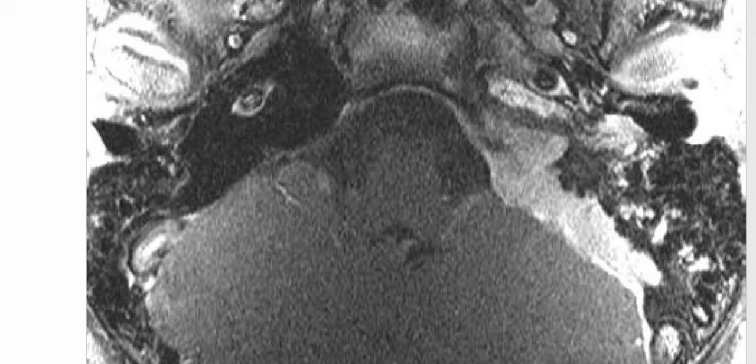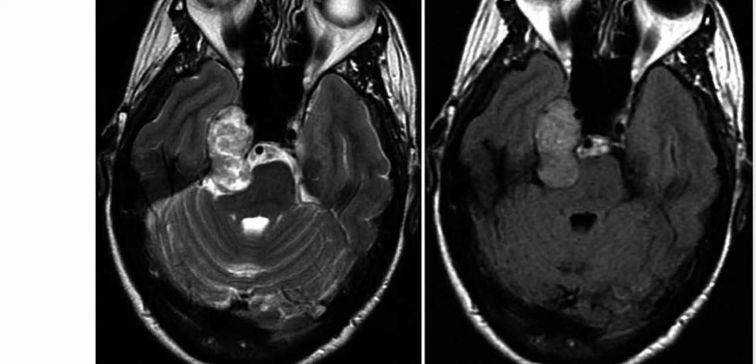Extramedullary hematopoiesis and Rosai-Dorfman disease, which is a non-Langerhans cell histiocytosis, most commonly occurring in children and young adults, can also involve the dura. This is a diagnosed case of plaque-like meningioma in a patient with NF2.